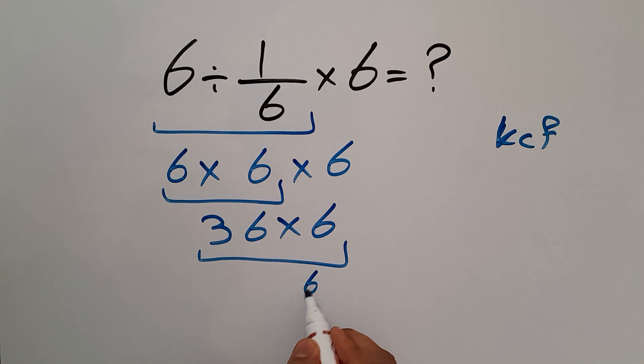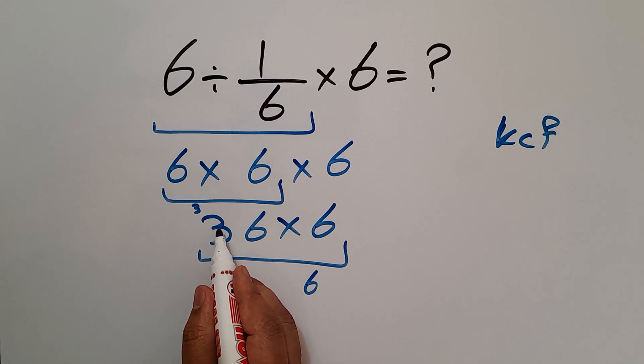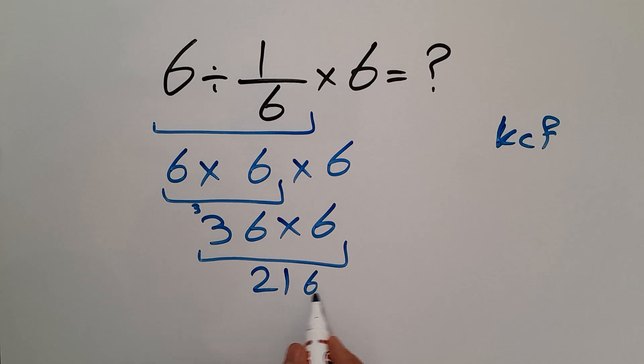And this is equal to... 6 times 6 gives us 36, so we have 36. 6 times 3 equals 18, and 18 plus 3 gives us 21. So our final answer to this problem is 216.